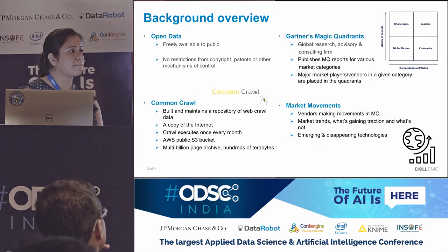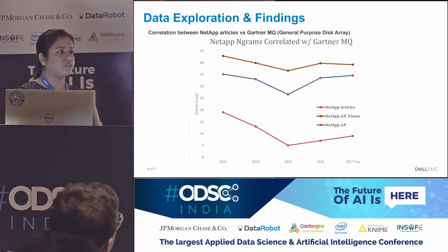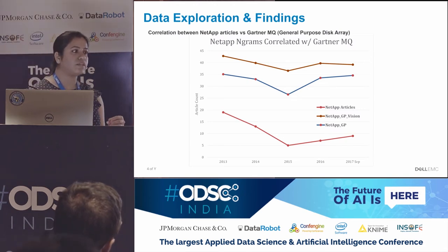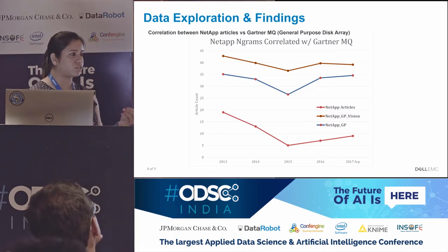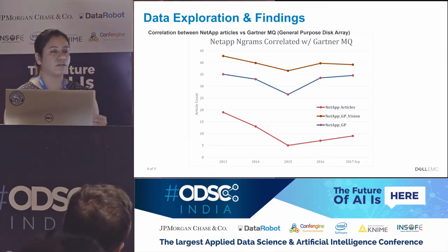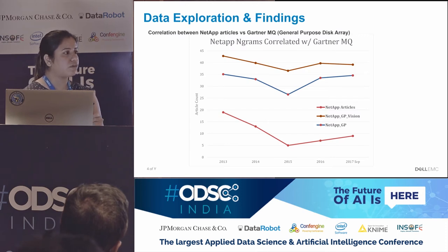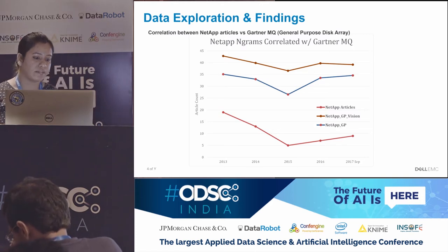Is there any relationship between Common Crawl and the Magic Quadrant? These are two separate things. When we started this project, we made a hypothesis — one of our project goals was to find out if there is a correlation between what's being talked about a vendor in the media, news websites, their own websites, articles, or analyst reports, and whether that correlates with vendors making movements in the Magic Quadrant. And this is one of our findings.